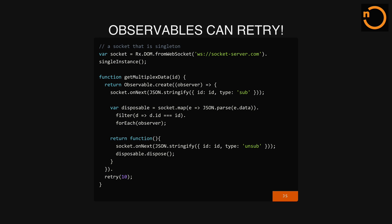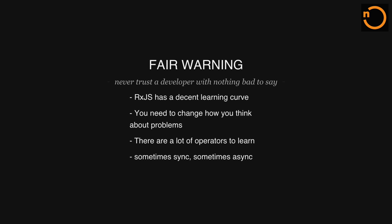This is a pretty complicated example, but we'll see a simpler one in a second. One fair warning: you should never trust a developer who has nothing bad to say. What is bad is that RxJS — using observables — has a pretty decent learning curve. You have to change the way you think about the problem, and there are a lot of operators to learn: not only map, reduce, filter, but also retry, map latest, select latest, and many others. What happens to me a lot is I don't know if an operator exists, so I build it myself, then realize it already existed. Also, observables sometimes work async and sometimes sync, which can cause debugging problems.